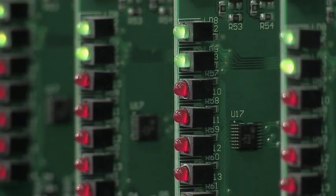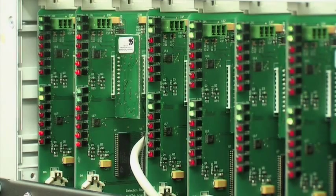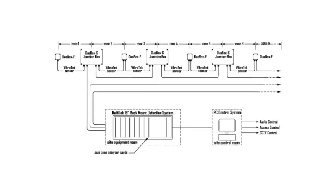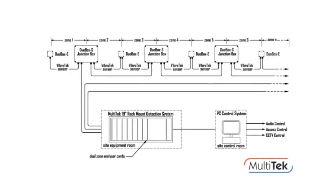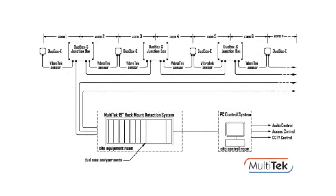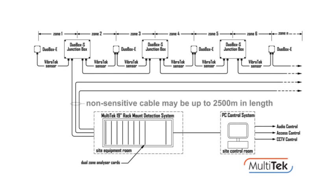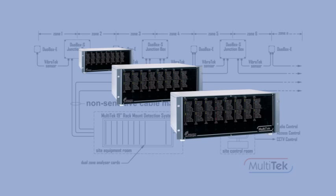Alternatively, the Multitec system employs eight signal analyzer cards mounted in a 19-inch rack to create a centralized network, taking advantage of the fact that Vibratec 3G sensor cable segments can be located up to 2500 meters from the analyzer. Multiple racks may be used in larger applications.